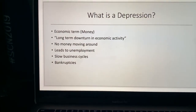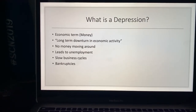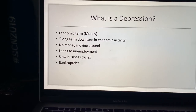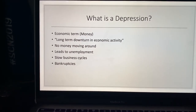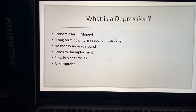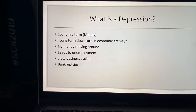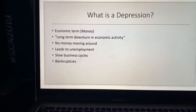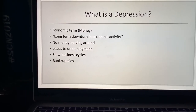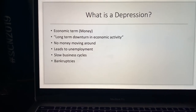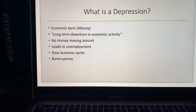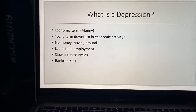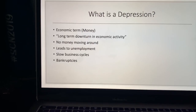What is a depression? We're talking in economic terms here — money flow, business cycles, money exchanging hands. Basically, a depression is a long-term downturn in economic activity. To break that down simply: no money is exchanging hands, it's not moving around, and the business cycle is slow.